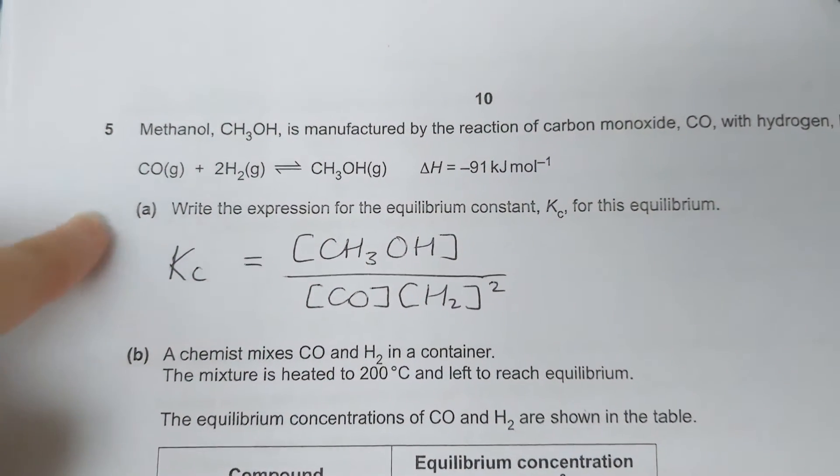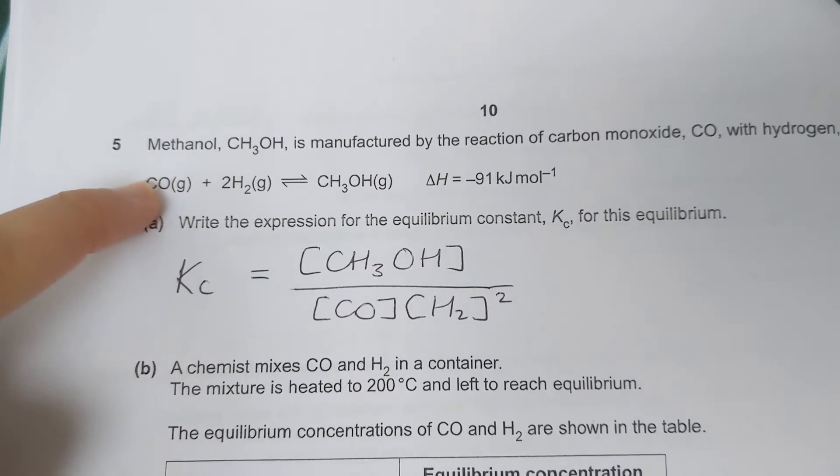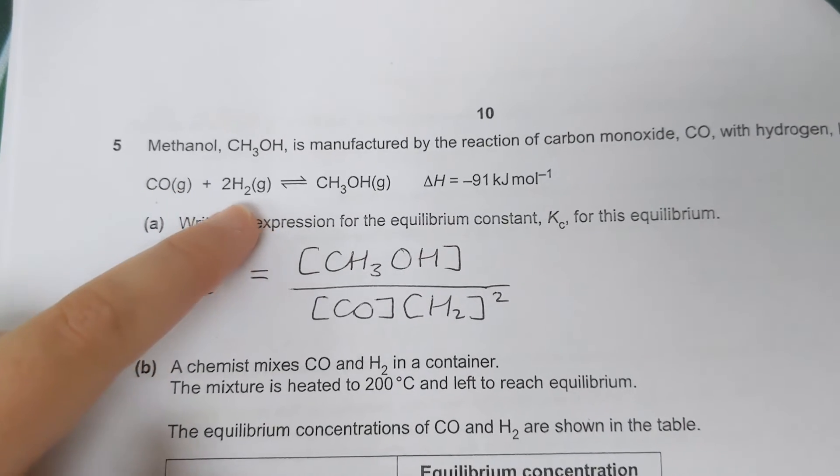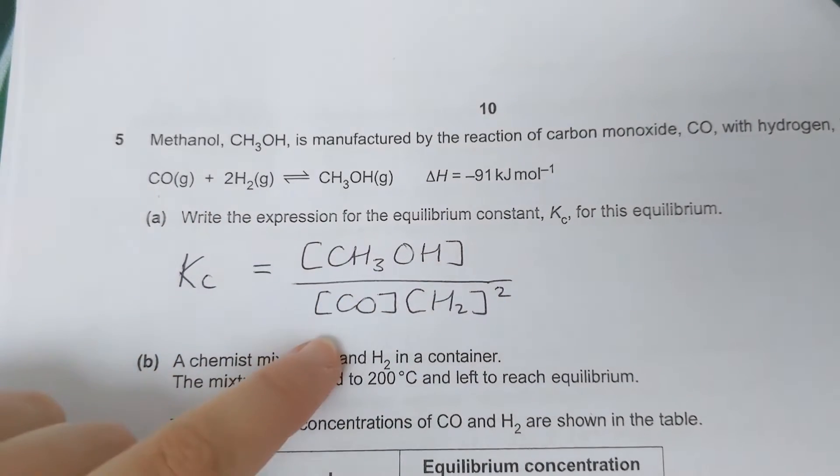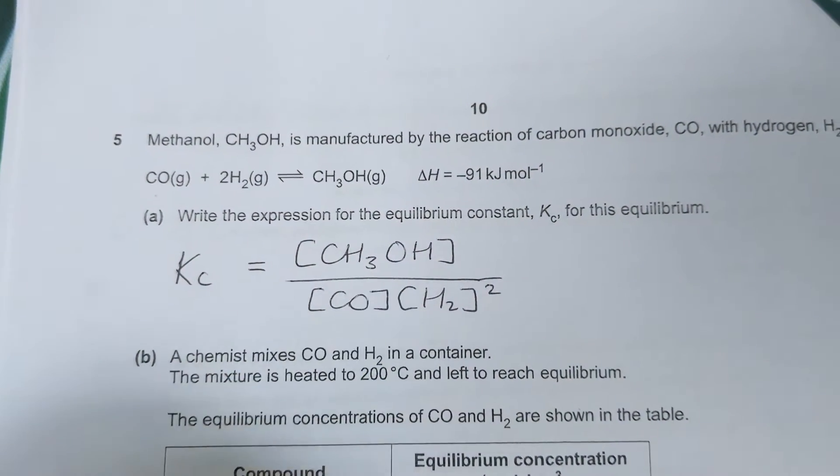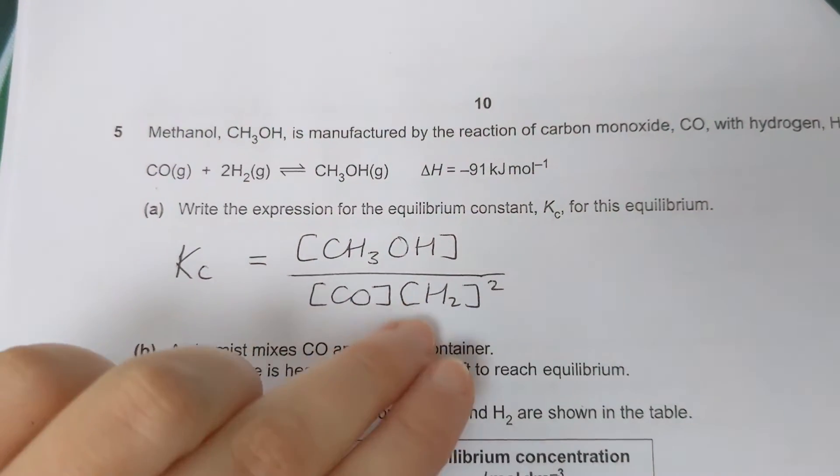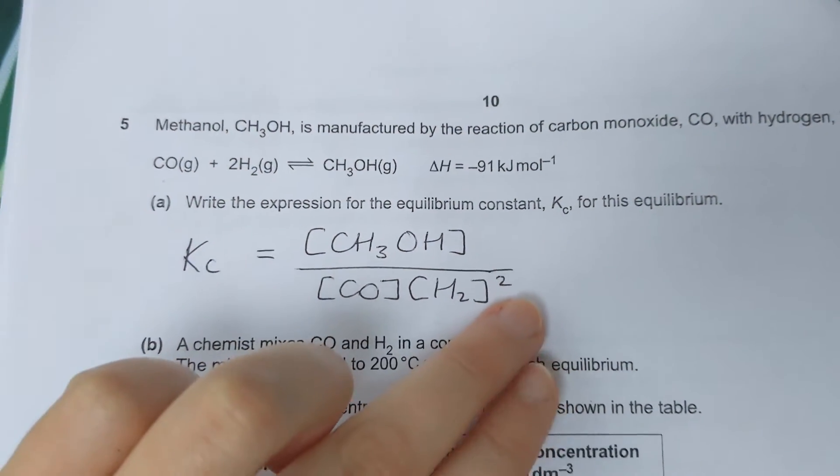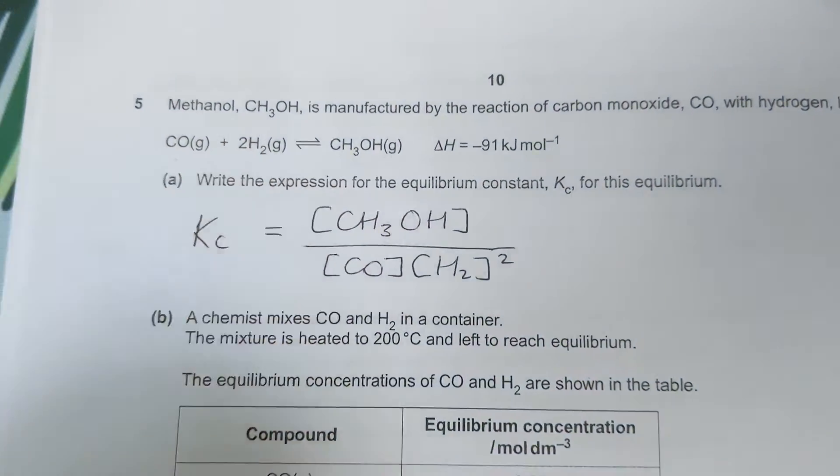So we have one mole of carbon monoxide on the reactant side and two moles of hydrogen. Carbon monoxide is raised to the power of one, but we don't need to write a one. Whereas hydrogen is raised to the power of two or squared because of the two moles here.